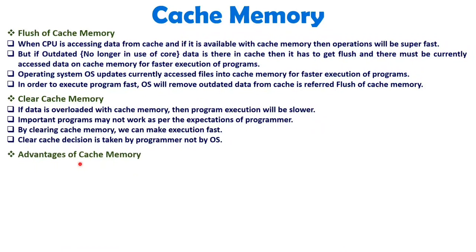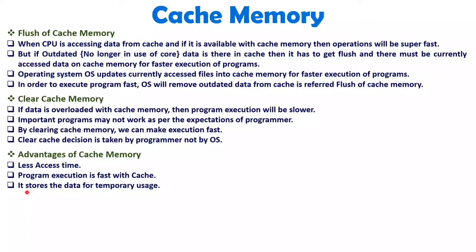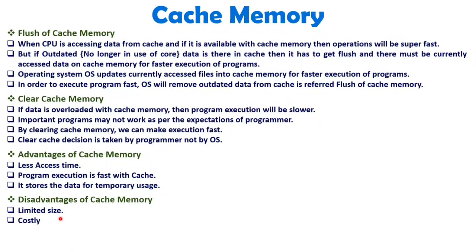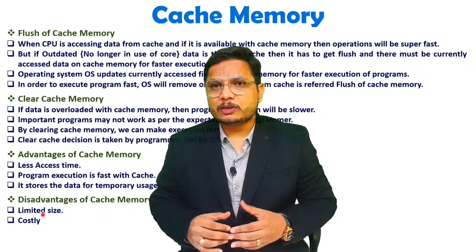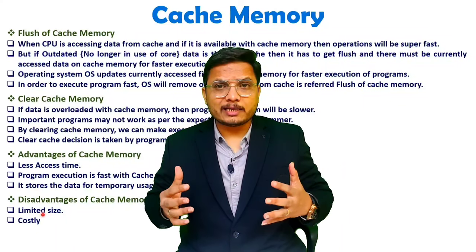There are a few advantages of cache memory: there will be less access time, execution of programs will be very fast, and it stores data for temporary use. When it comes to disadvantages, cache memory has limited size and is costly. For example, with L3 cache we have up to 8 MB of cache memory — so it is costly as well as limited in size. That is how cache memory is organized with a computer system.